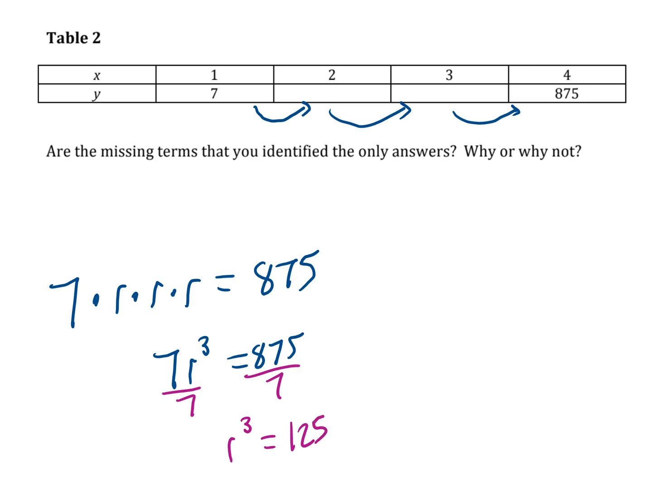And if we think about it, what's a number that I can multiply by itself three times to get to 125? We can figure out that R must be 5. So then, are the missing terms we identified the only answers? So 7 times 5 would be 35. 35 times 5 would be 175. And 175 times 5 would be 875. So we can use that strategy to solve this table.